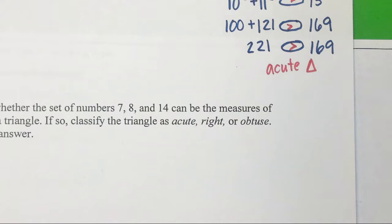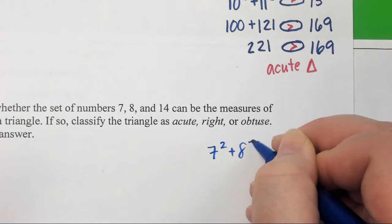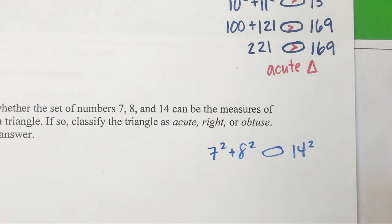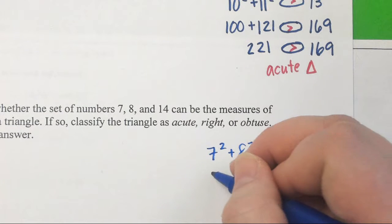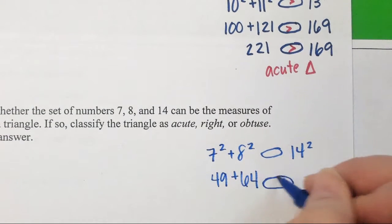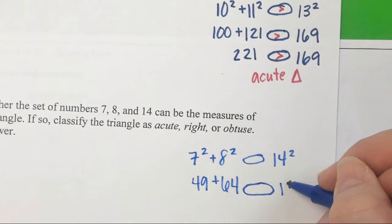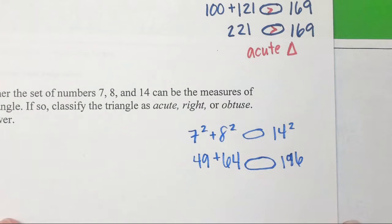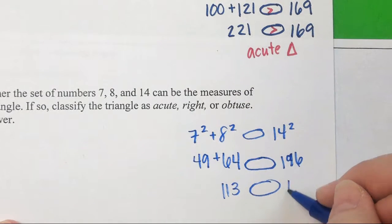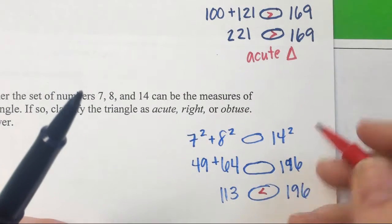7, 8, 14, is that a triple we know? So let's do 7 squared plus 8 squared, our circle, and then 14 squared. 7 squared is 49. 8 squared is 64. I don't know 14 squared, I think 196? So you add 49 plus 64, what do you get? 113. Is 113 greater than, less than, or equal to 196? It's less than, so we have an obtuse triangle.